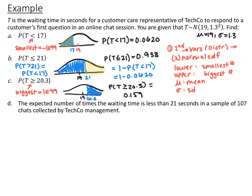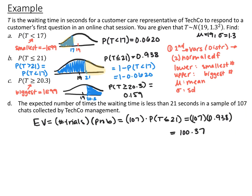Note that 20.3 is exactly one standard deviation above the mean, so you could use the empirical rule percentages with symmetry to find this. For the last part, find the expected number of times the waiting time is less than 21 seconds in a sample of 107 chats. Expected value is the number of trials times the probability: 107 times 0.938 from part B, which gives approximately 100 times.